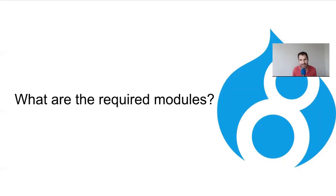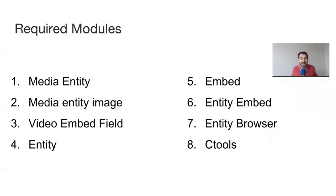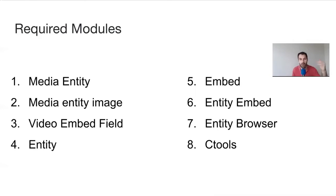So what are the required modules to get started? My definition of media management is: as an editor, I want to be able to add a YouTube video and upload images, then browse those assets, select them, and embed them into an editor. To achieve that, you really just need eight modules. I spent about five hours sifting through all the modules because there are a lot of modules for media management in Drupal 8. The eight are: Media Entity, Media Entity Image, Video Embed Field, Entity Module, Embed, Entity Embed, Entity Browser, and C Tools.